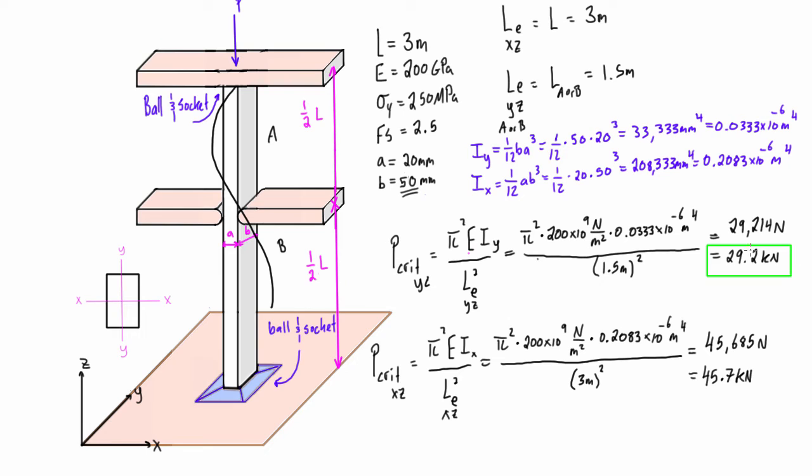Something else that we can do here is we can just find our allowable load if we're given a factor of safety. All we have to do is just divide our ultimate load by the factor of safety. So we have P allowable is going to be 29.2 kN divided by 2.5, and that's going to give us 11.7 kN. So that is the allowable load that we can apply to be within our factor of safety here of 2.5.